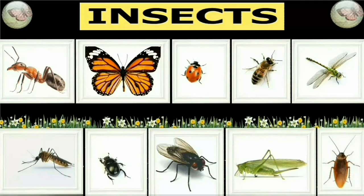First question: which insect has black spots on its red body? Answer is ladybird. Ladybird has black spots on its red body.